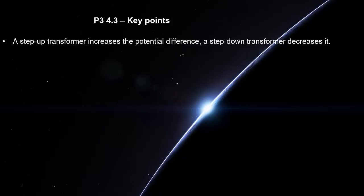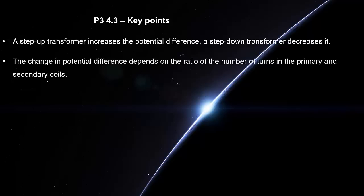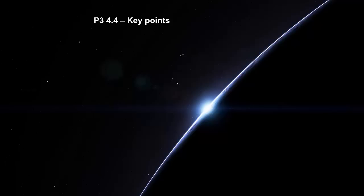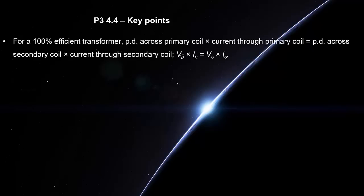A step-up transformer increases the potential difference, a step-down transformer decreases it. The change in potential difference depends on the ratio of the number of turns in the primary and the secondary coils. The potential differences across the primary and secondary coils of a transformer are related by the equation. For a 100% efficient transformer, PD across primary coil times current through primary coil equals PD across secondary coil times current through secondary coil.